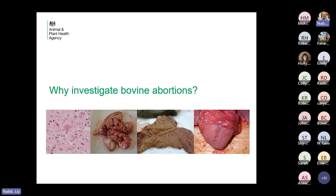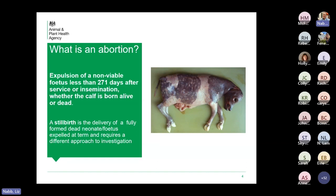So we'll start with why — why investigate bovine abortions? Just a reminder of the definition of an abortion first: it's classed as expulsion of a non-viable fetus, alive or dead, but less than 271 days after the service or insemination. We differentiate that from a stillbirth, which is a fully formed dead fetus or one that dies shortly after birth, expelled at term, because we actually investigate those differently and we won't be covering that today.